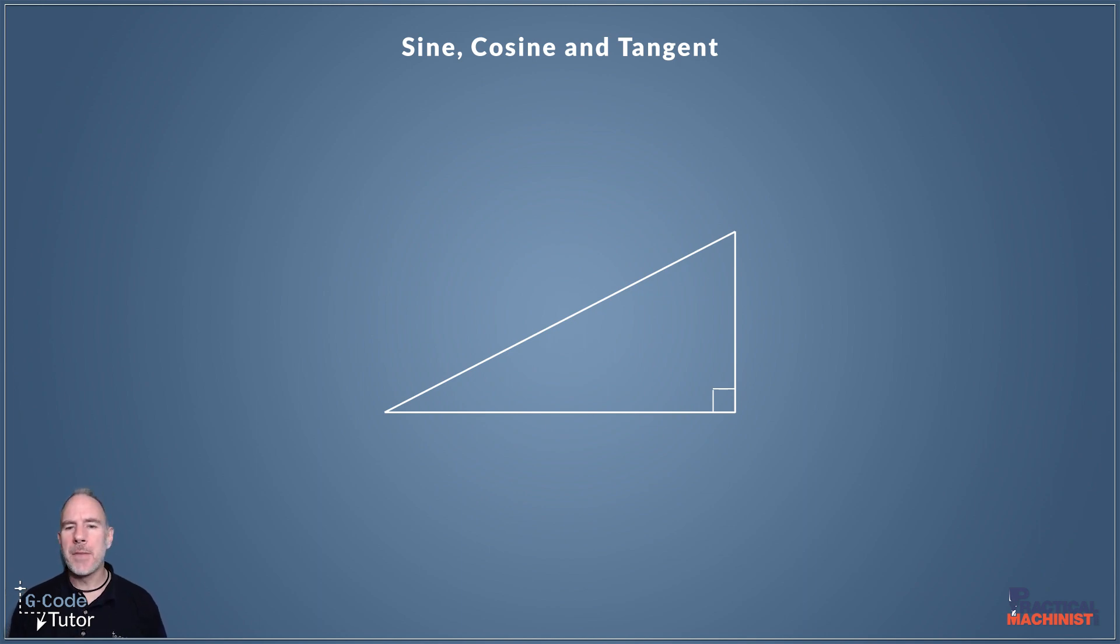So here is our right angle triangle and the little square in the bottom there designates that it's 90 degrees on the bottom right corner of that triangle. The longest length is always known as the hypotenuse. This doesn't matter which way our triangle is up, always the longest length is the hypotenuse and this never changes.